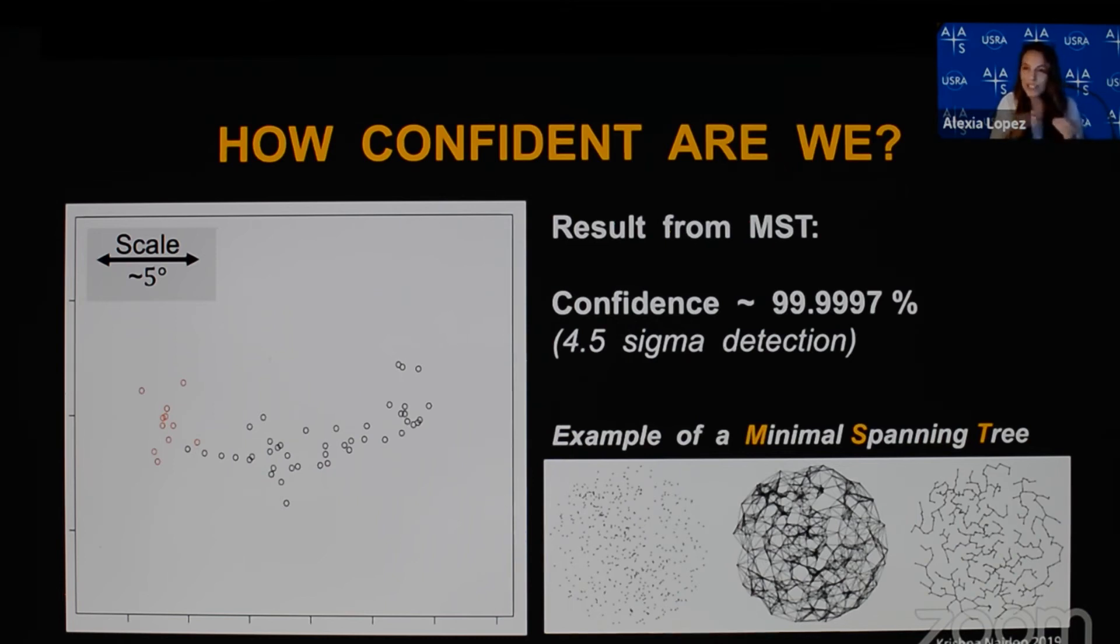The algorithm locates the giant arc in two parts, one very large portion and one small portion. The larger portion has a significance of 4.5 sigma, which means we have over 99.9997% confidence in our result.